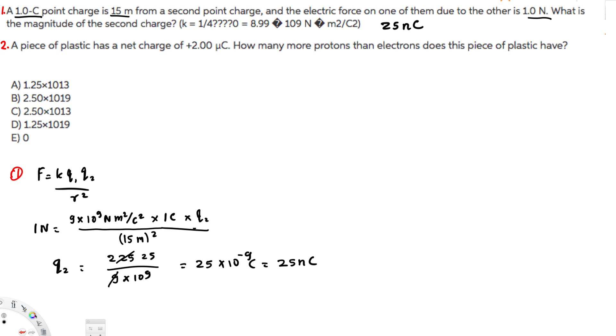Let's do the second question. The question is: a piece of plastic has a net charge of 2 micro coulombs. How many more protons than electrons does this piece of plastic have? We know in one coulomb there is 6.28 times 10 to the power of 18 electrons.